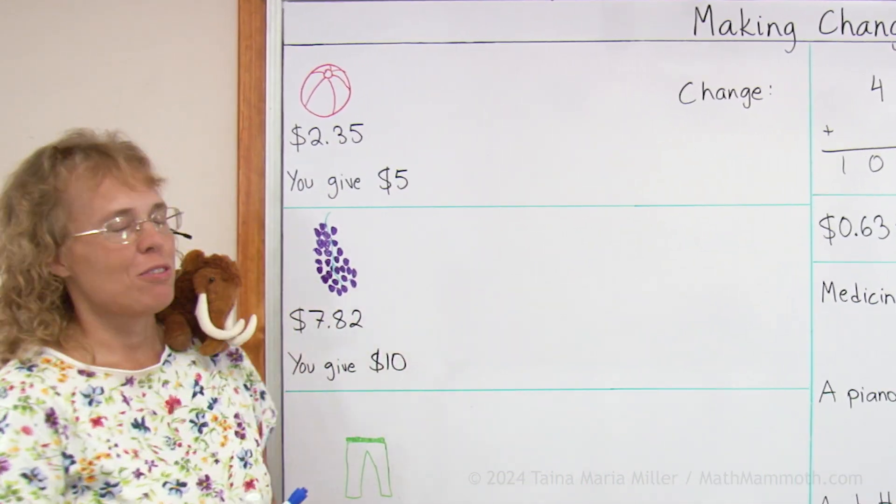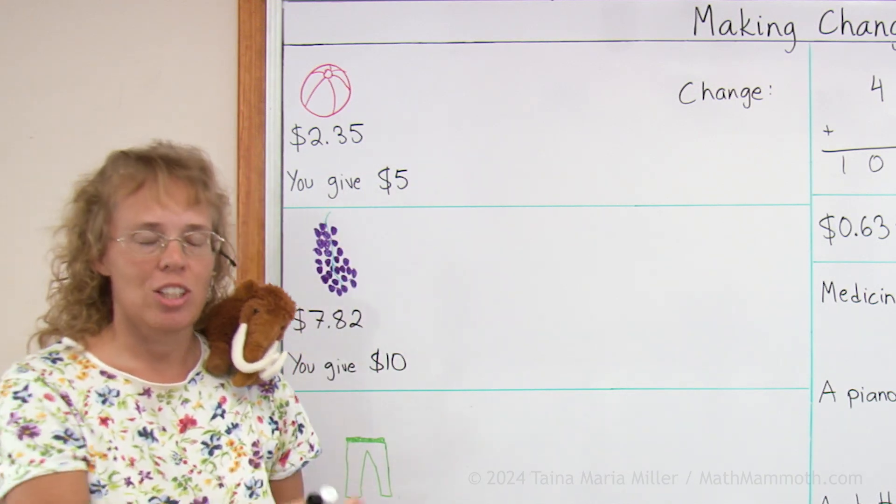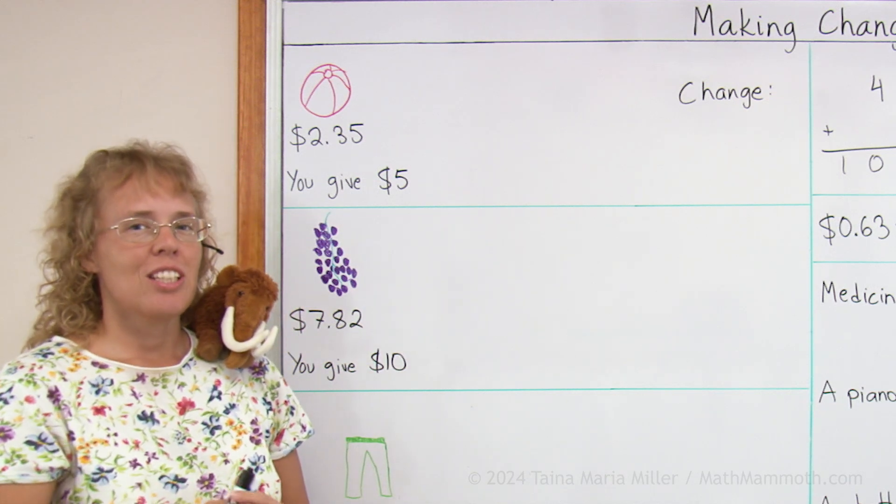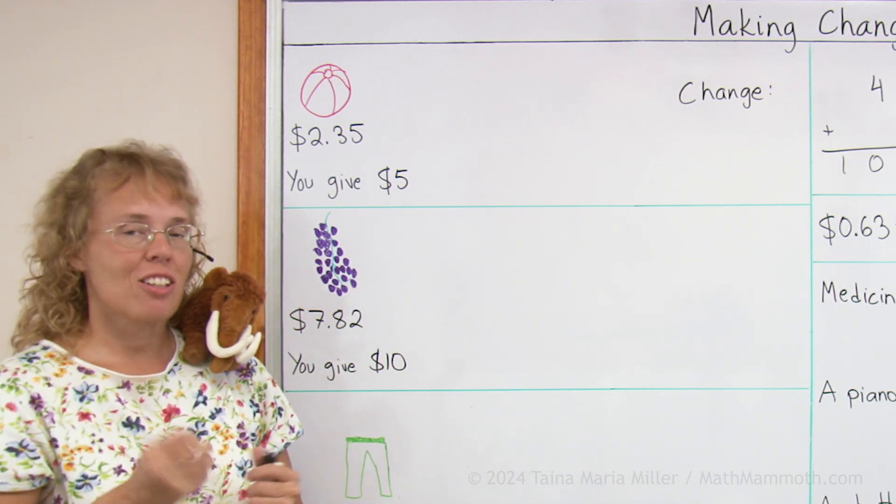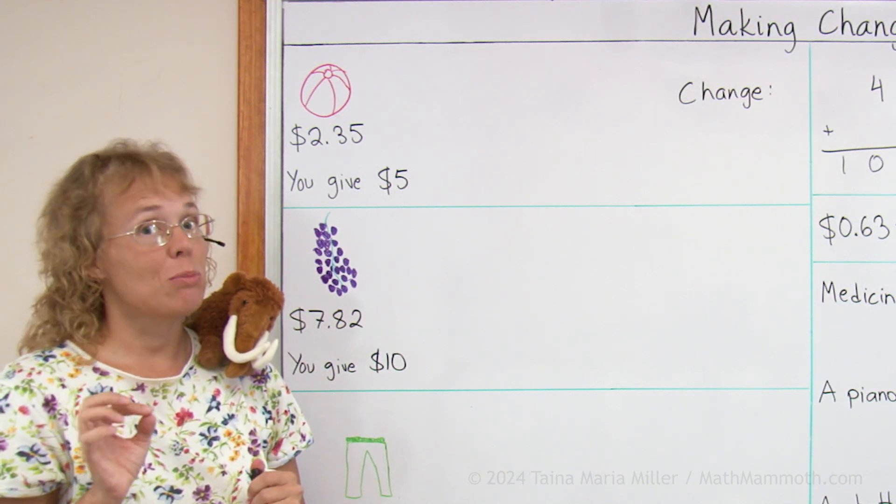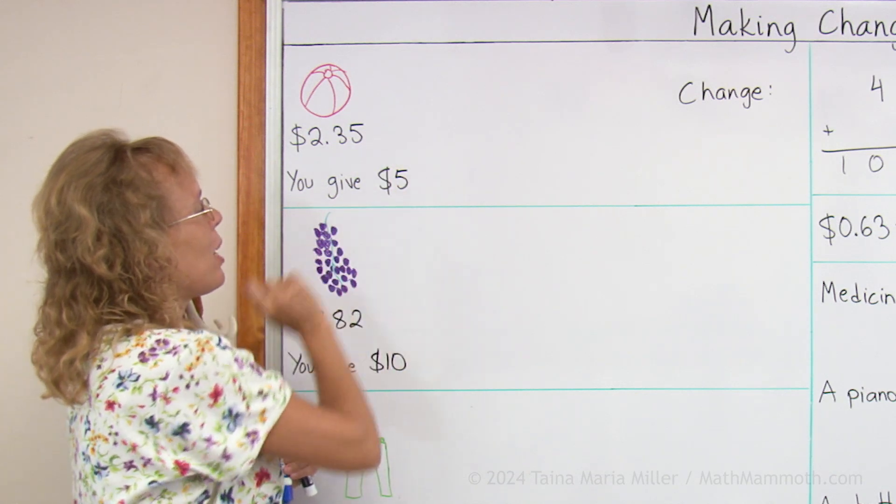Let's say you buy this beach ball for $2.35 and you give $5. So you're giving more money than what it costs. And then the clerk or the shopkeeper will give you some change. He will give you the difference of these two amounts.